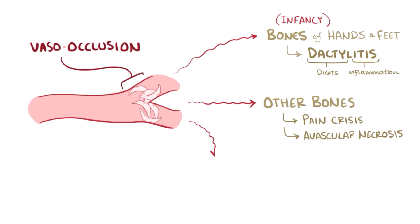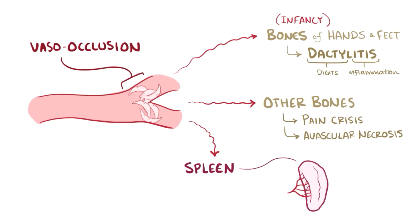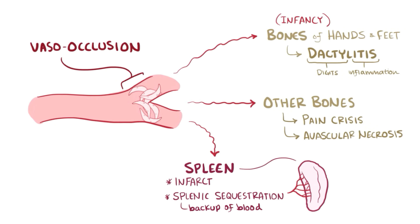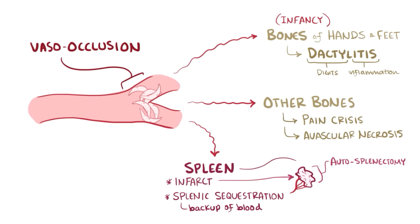Red blood cells can also clog up the spleen, which can lead to an infarct of the spleen, as well as an enormous backup of blood in the spleen, called splenic sequestration, a life-threatening complication. Over time, splenic infarcts can lead to autosplenectomy, where the spleen scars down and fibroses to basically nothing.